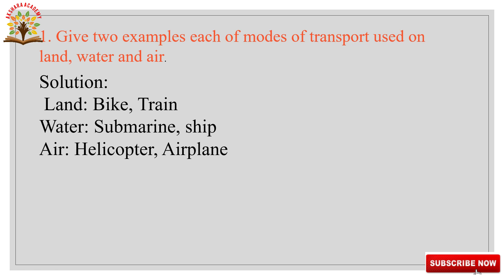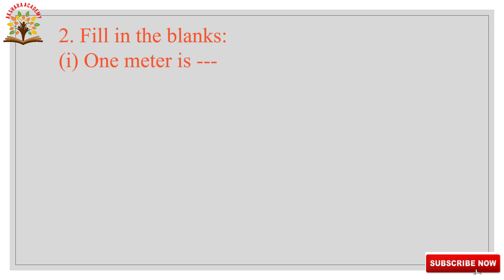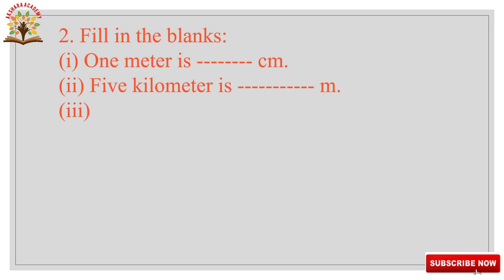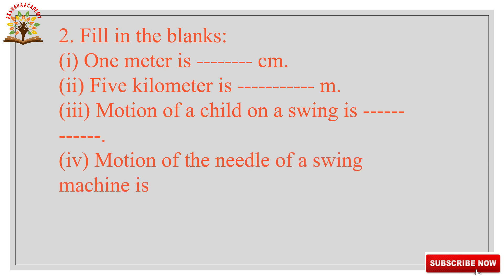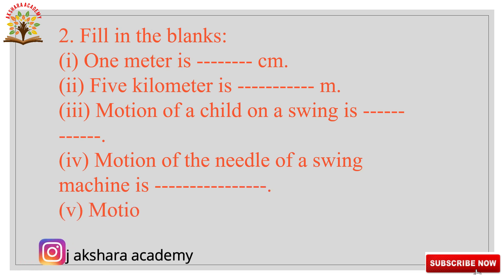Next, question 2 — Fill in the blanks. 1) 1 meter is equal to dash centimeter. 2) 5 kilometer is dash meters. 3) Motion of a child on a swing is which motion? 4) Motion of the needle of a sieving machine is dash. 5) Motion of a wheel of a bicycle is dash.